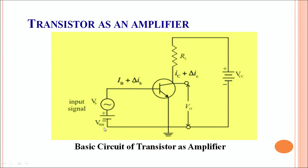The voltage VBE is enabling this part of the circuit to be in forward bias. Apart from this, an input signal is fed to the input circuit and this input signal is to be amplified.